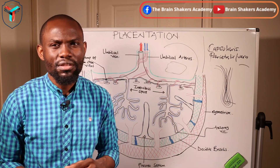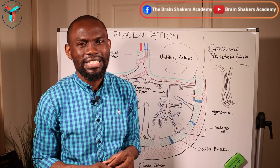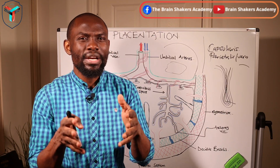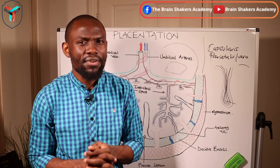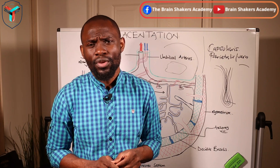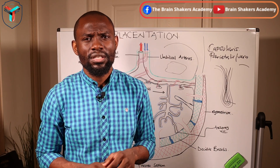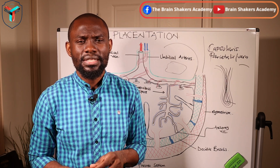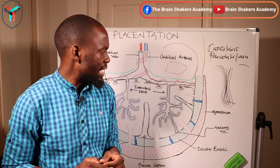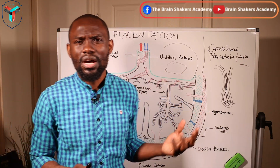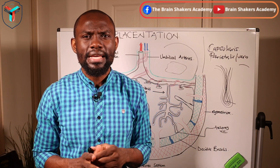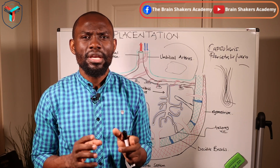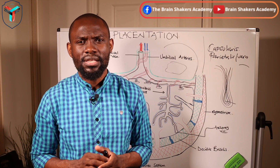Sometimes a placenta may become difficult to remove or deliver, which means the anchoring villi have gone further than the endometrium. These conditions — placenta accreta, placenta increta, and placenta percreta — are covered in a separate video. Basically, the placenta plays a key and major role in determining the outcome of a pregnancy.